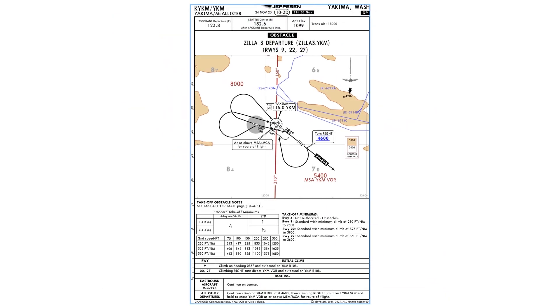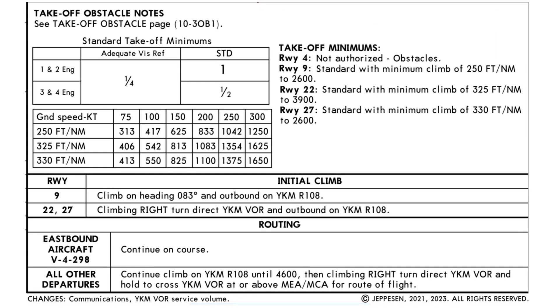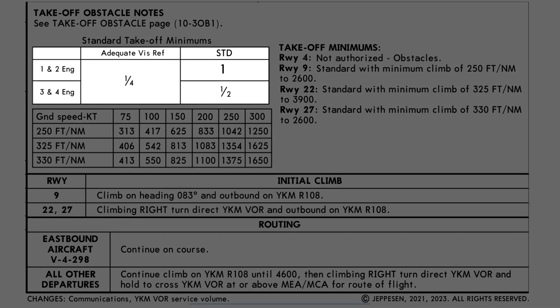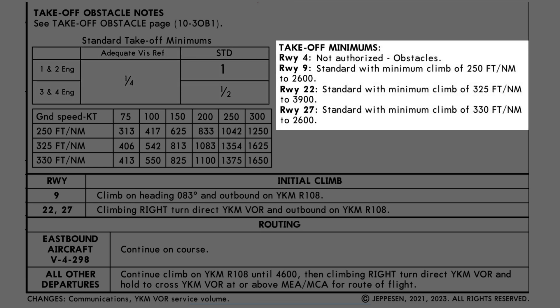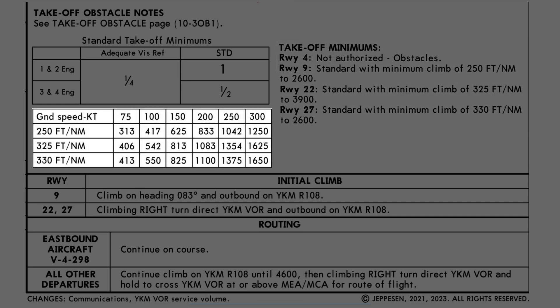In addition to that benefit, the Jeppesen plate also lists out the standard takeoff minimums, both with and without the adequate visual references. Some Jeppesen departure charts will also include a list of these references, but they can always be found in the terminal procedures publication page for the airport. The takeoff minimums for each runway are listed, but you won't find on FAA plates this chart showing the feet-per-minute conversion of each required climb gradient and the minimums for different climb-out speeds. This makes it easy to determine if your aircraft can meet minimum climbs.